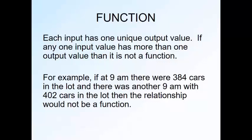So in summary, each input has one unique output value if something is a function. If any one input value has more than one output value, then it is not a function. For example, if at 9am there were 384 cars in the lot, and there was another 9am with 402 cars in the lot, then the relationship would not be a function.